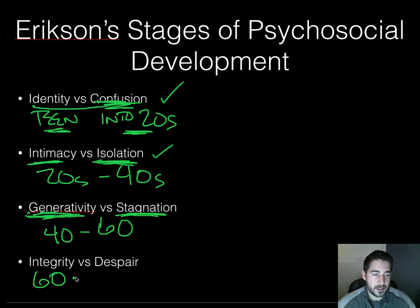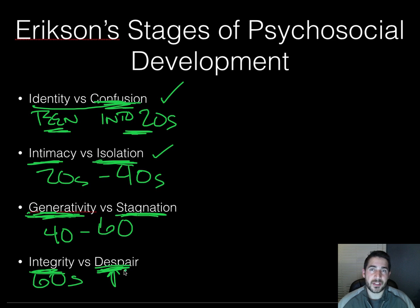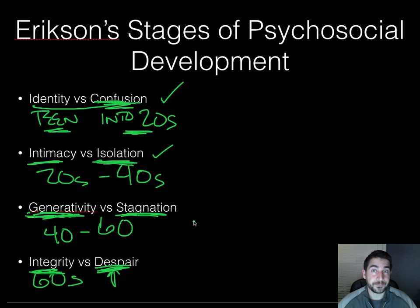Finally, sixties and up, you're in stage eight: integrity versus despair. This is where you look back at your life and ask: did I live with integrity? Do I have something to be proud of, something to pass on to my children and grandchildren? Or if you didn't, you'll feel a sense of despair — like you've wasted your life and you're going to die unhappy. These are all Erikson's stages. They match up with Freud's stages in that there are eight, and generally occur around the same ages, but they're not hard and fast. We use it as a reference, not as a definitive decider of what's going on in your life.